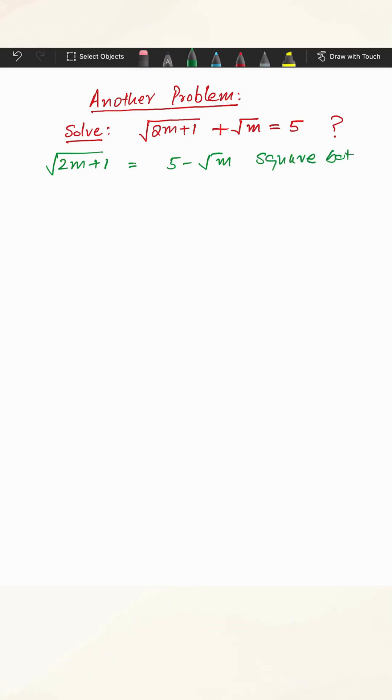If you square both sides, on this side you get 2m plus 1, on the other side you will get 25 minus 10 root m plus m.